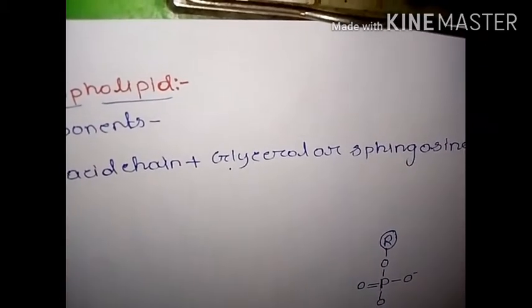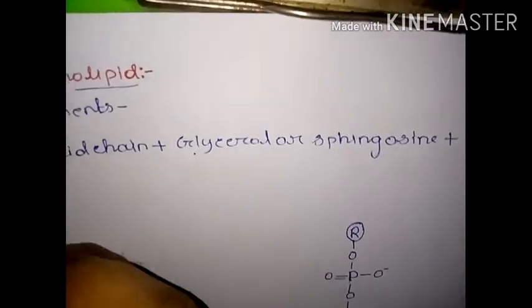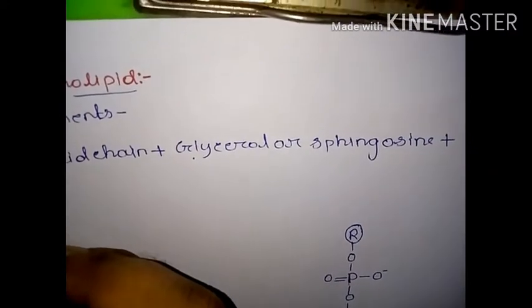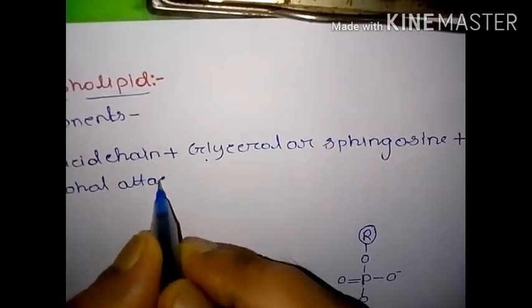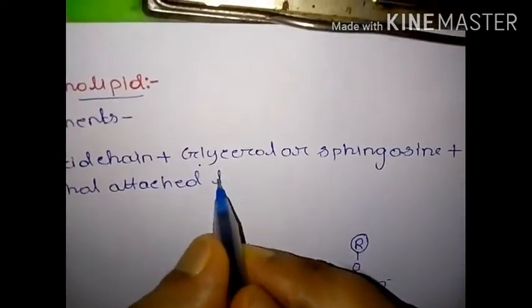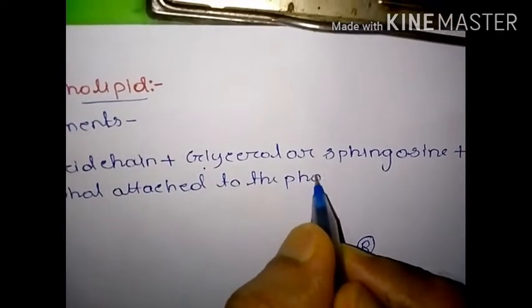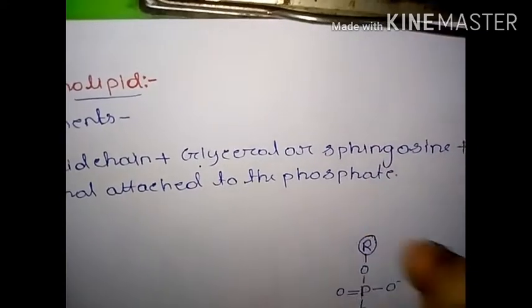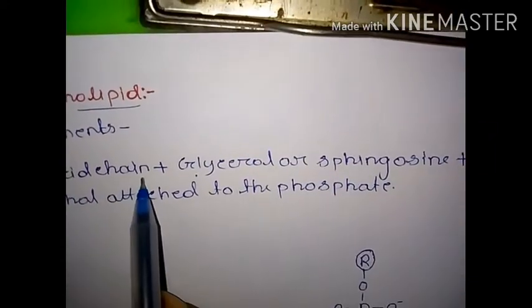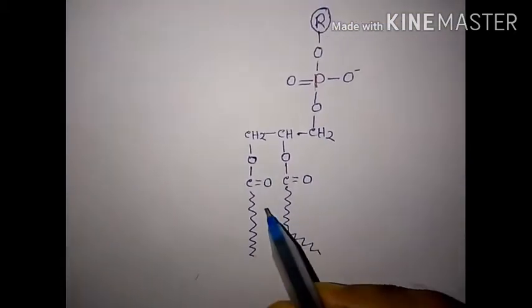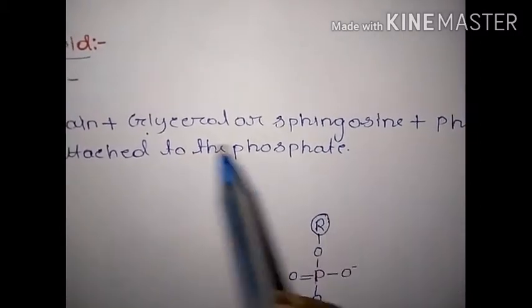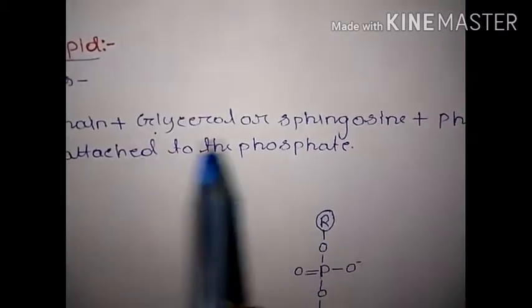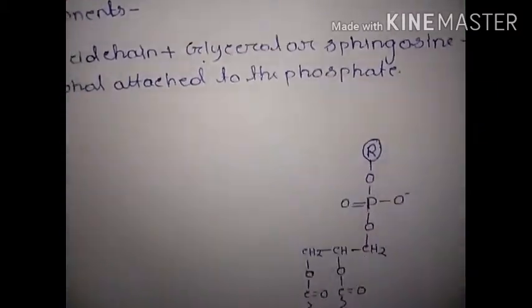The next component is phosphate — that is why it is called phospholipid, due to the presence of phosphate. With the phosphate there is another bulky group or an alcohol attached to the phosphate. The fatty acid chains are all hydrophobic chains. So the components are: fatty acid chain, glycerol or sphingosine, phosphate, and an alcohol attached to the phosphate.